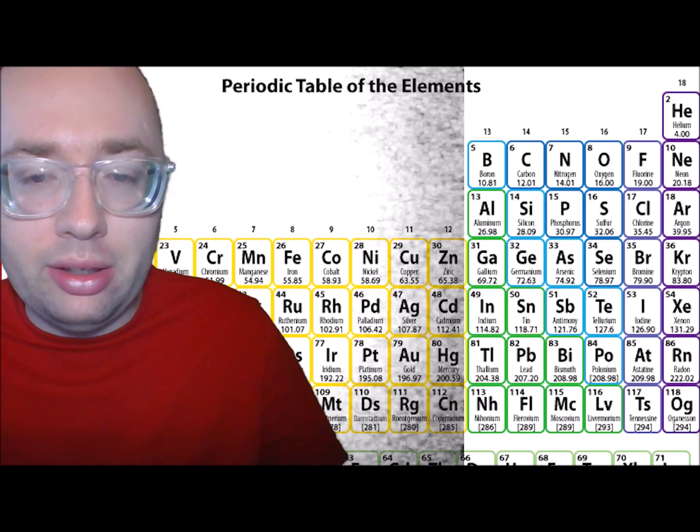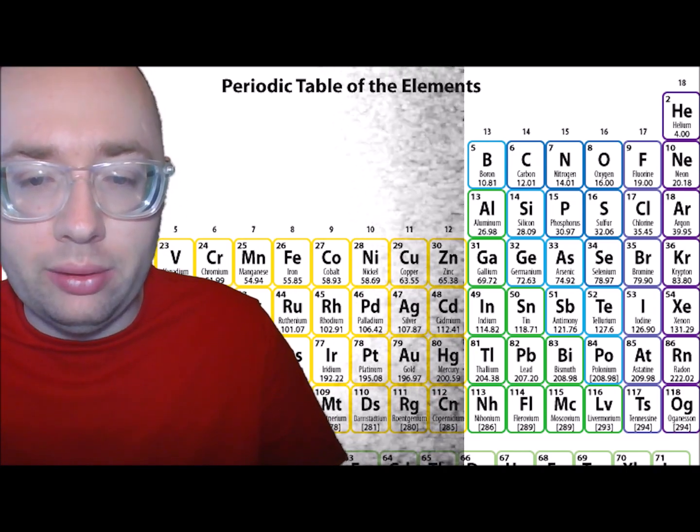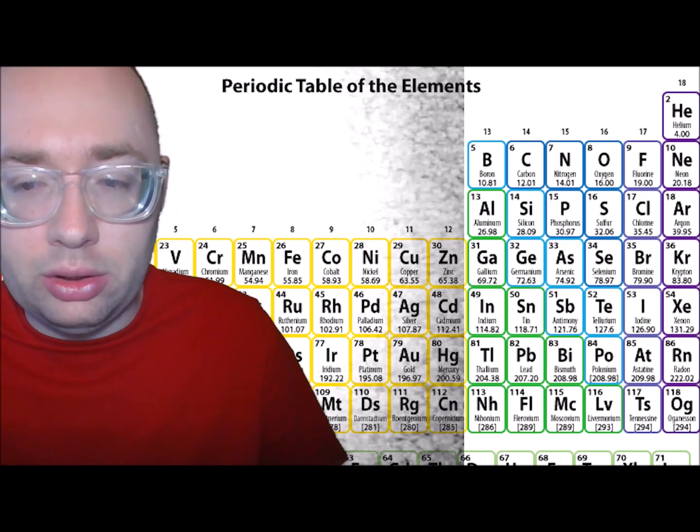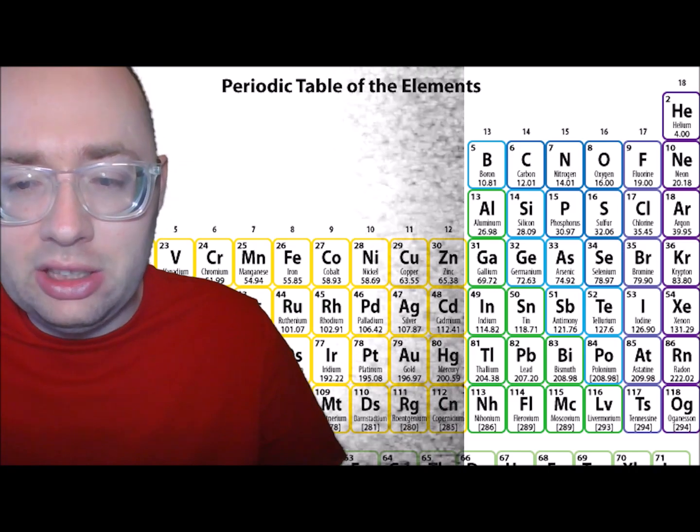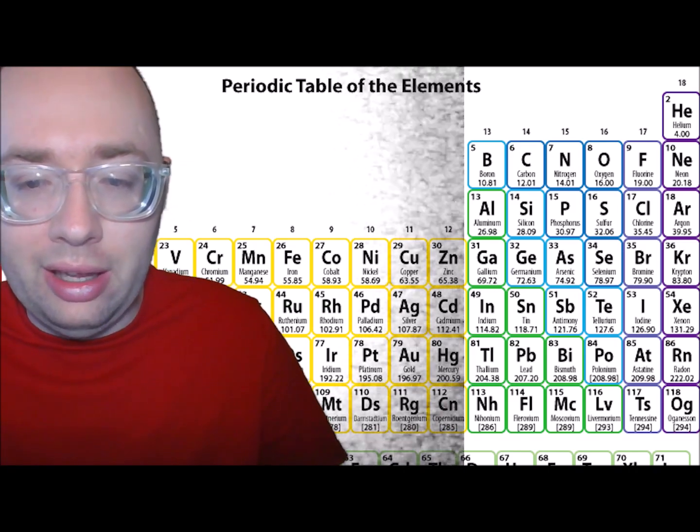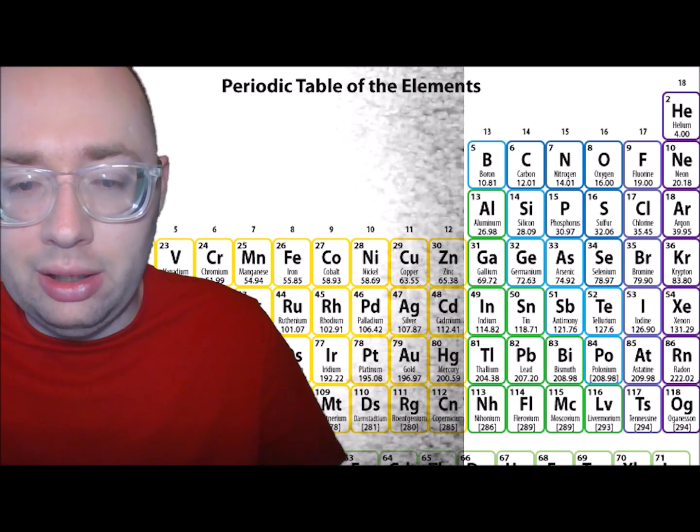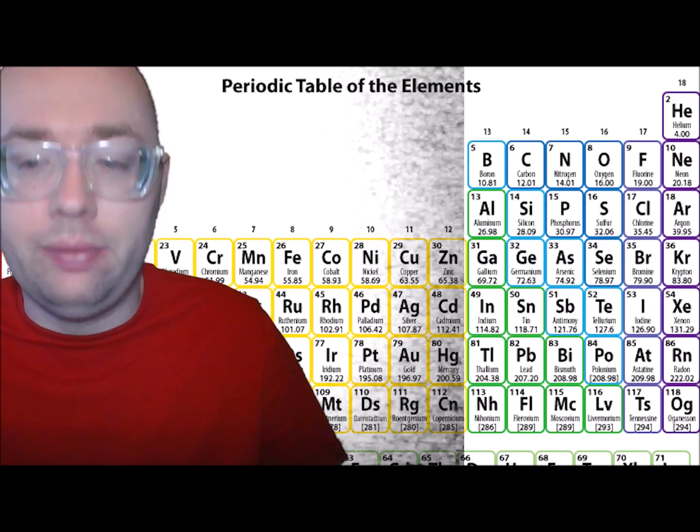Each horizontal row in the table is a period. There are 7 or 8 total periods. The first one is short and only has 2 elements, hydrogen and helium. The sixth period has 32 elements. Each period, the leftmost element has 1 electron in its outer shell. The rightmost element has a full shell.